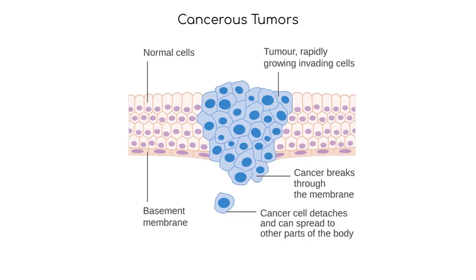Let's take a closer look at cancerous tumors. Cancers, or neoplasms, which means new growth, are characterized by rapid abnormal cell division. Cancer cells can also metastasize, or spread to other tissues.